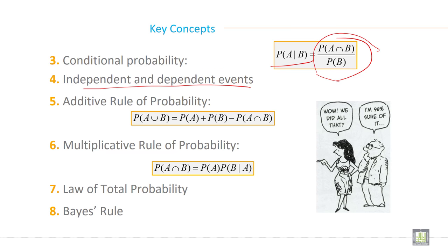Independent and dependent events, additive rule of probability: probability of A union B is equal to probability of A plus probability of B minus A intersection B. And multiplication rule: probability of A intersection B is equal to probability of A multiplied by probability of B given A, law of total probability and Bayes rule.